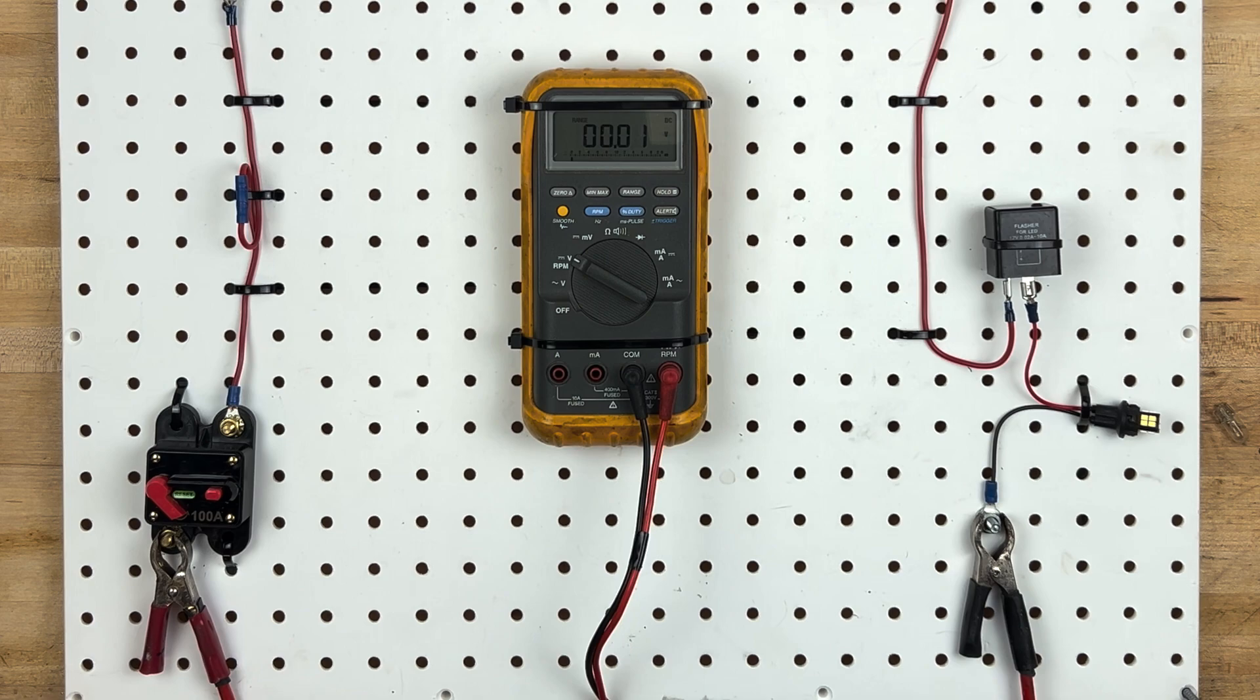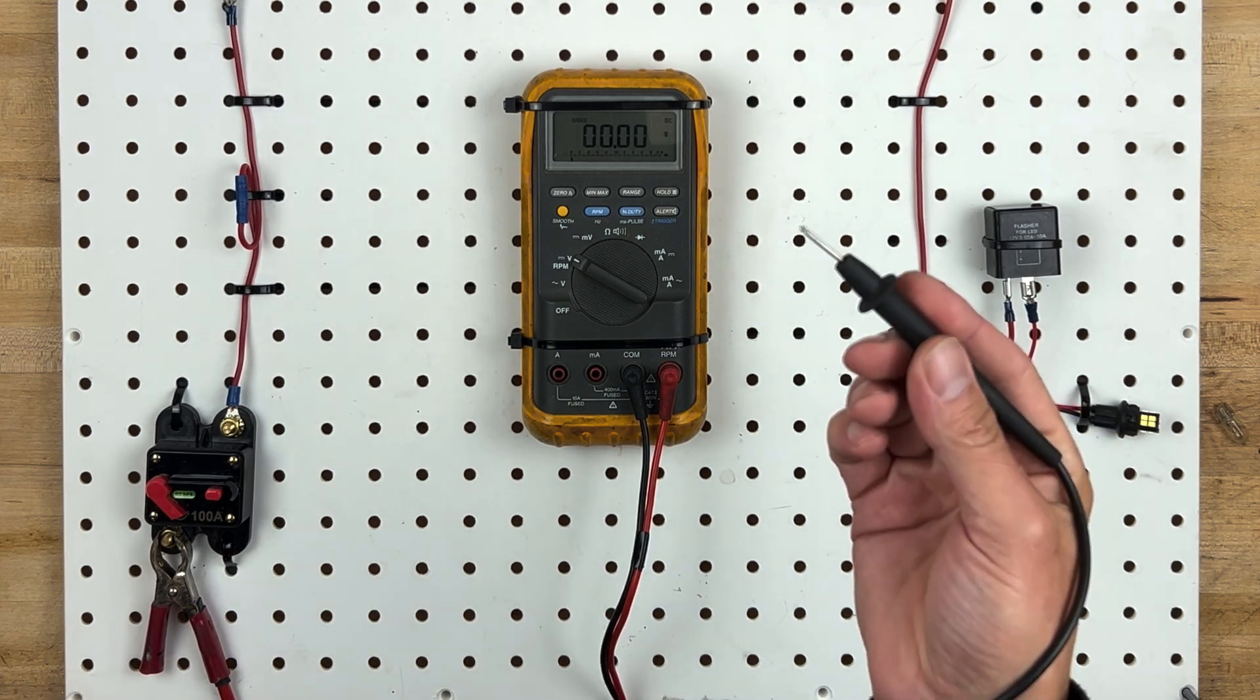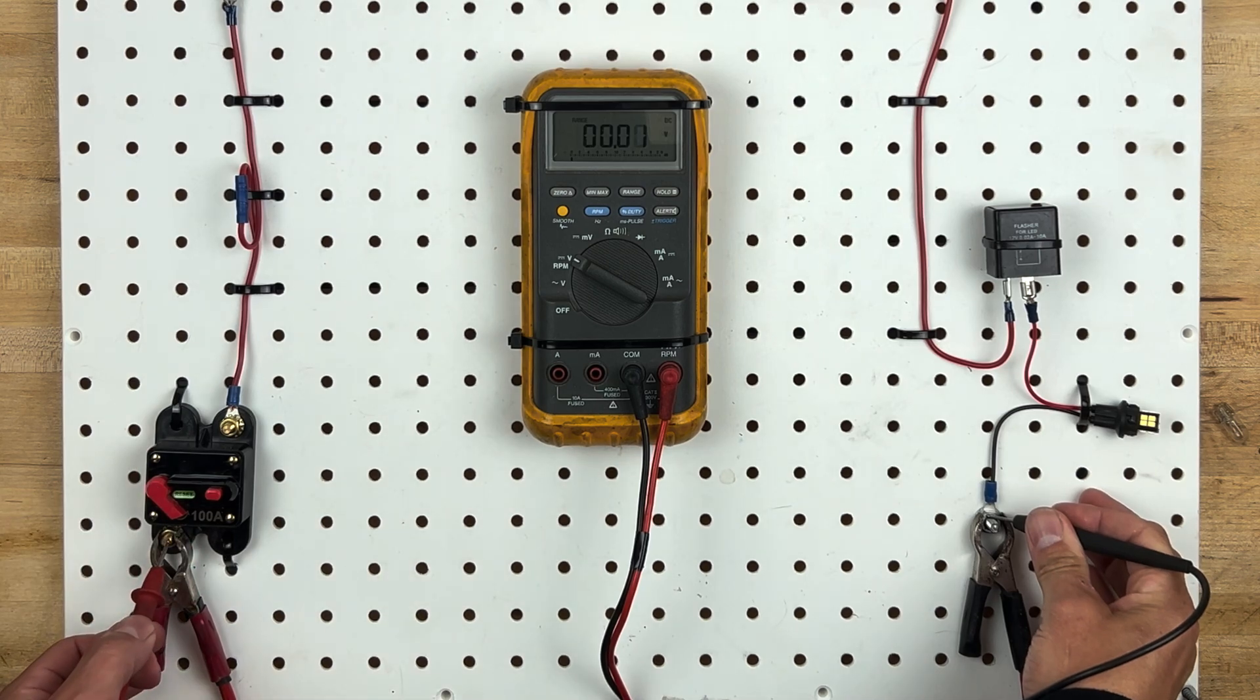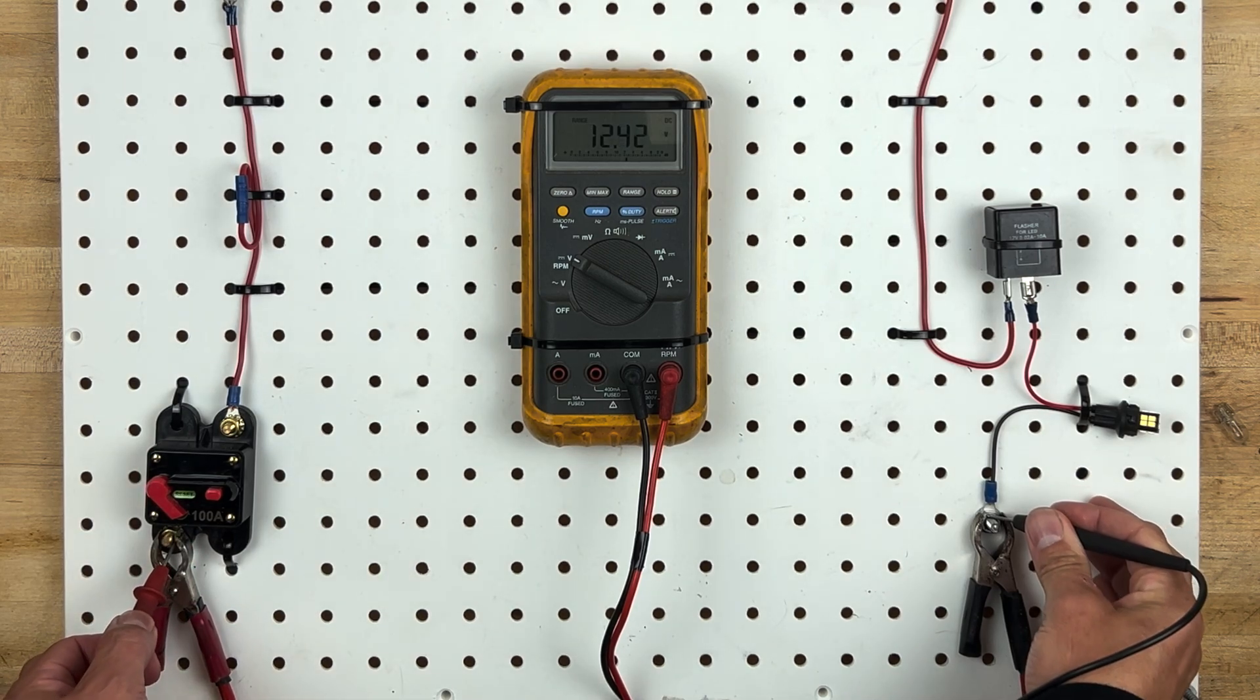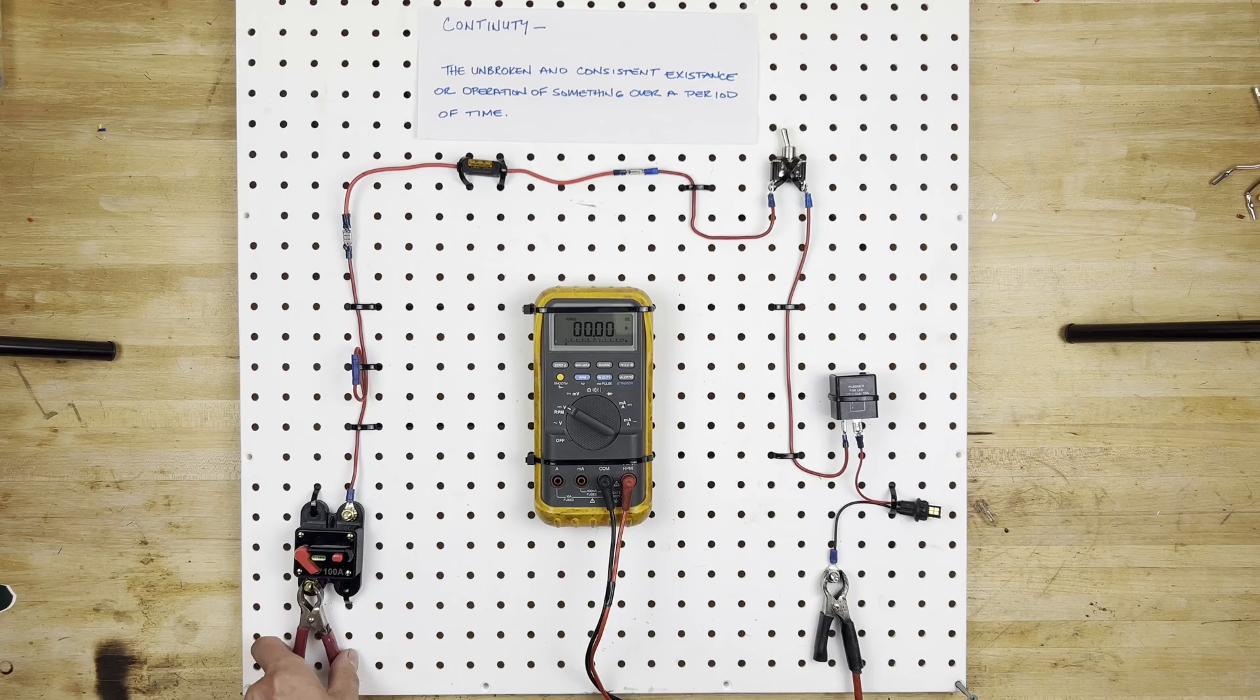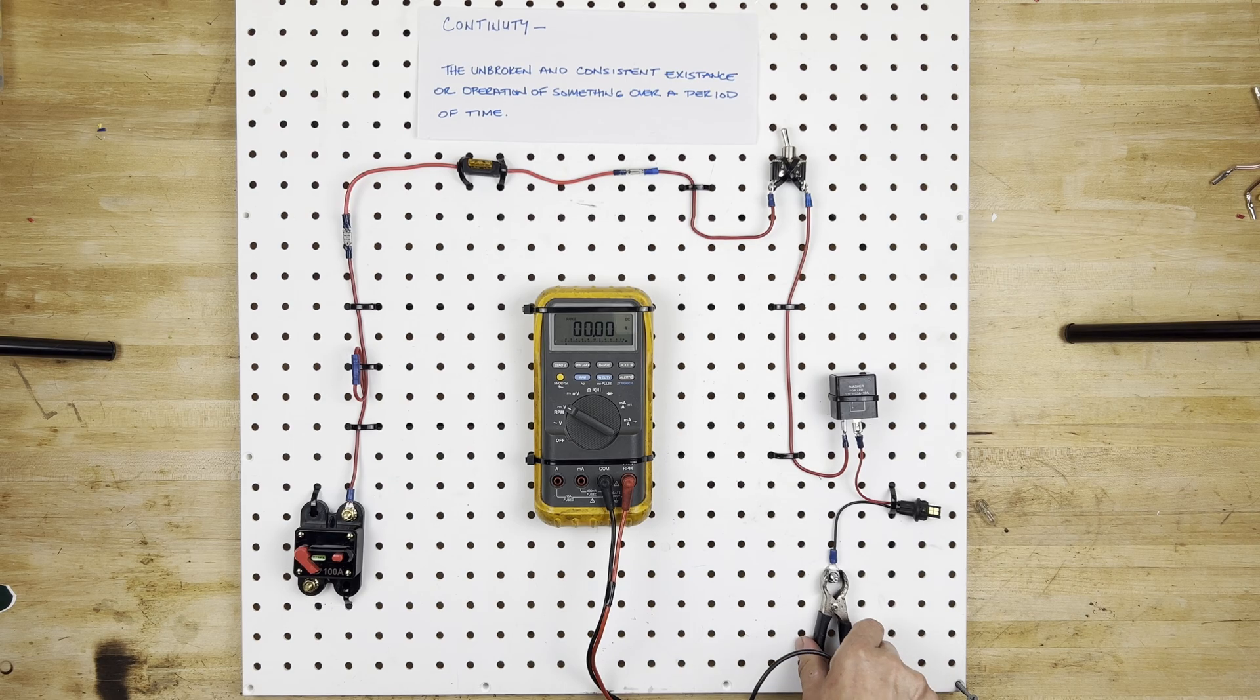So we have to set this to volts DC, and then we'll take the ground terminal and pop it on the ground side, and the positive and put it on the positive side. And you can see there's 12 volts at this circuit breaker. So this is powered up right now, and we need to remove that power. So I'm going to remove it and take off the ground too.